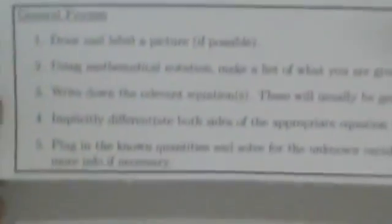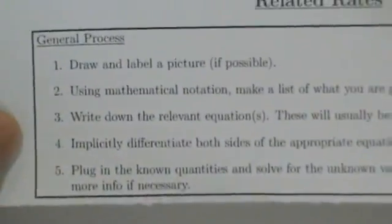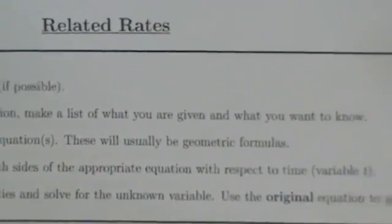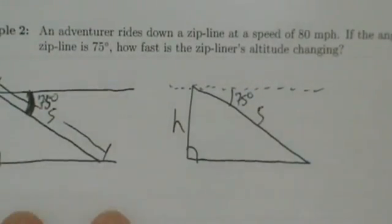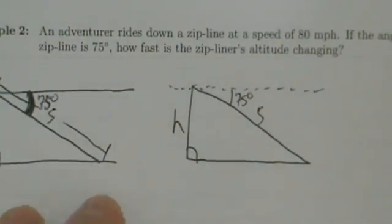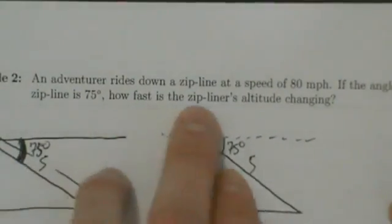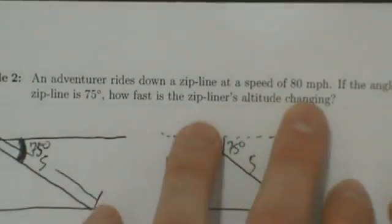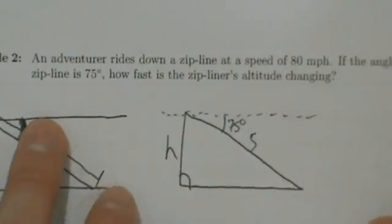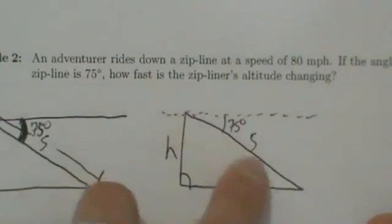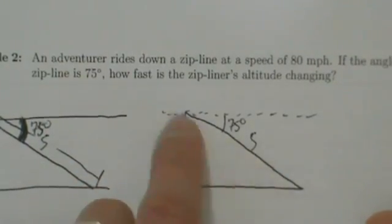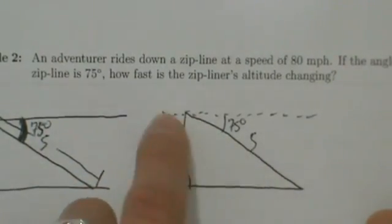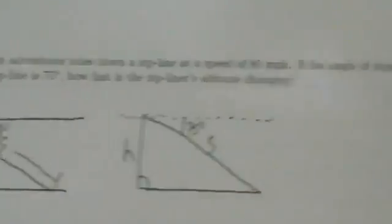That's step one. Step two: using mathematical notation, make a list of what you are given and what you want to know. We're given that the adventurer rides down on a zipline at a speed of 80 miles per hour. The adventurer is riding down this path — the hypotenuse of the right triangle — with a speed of 80 miles per hour.